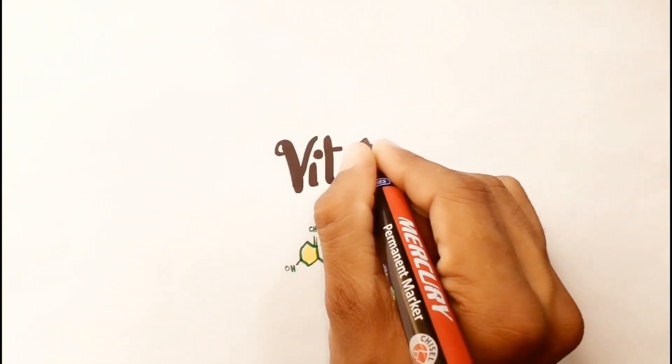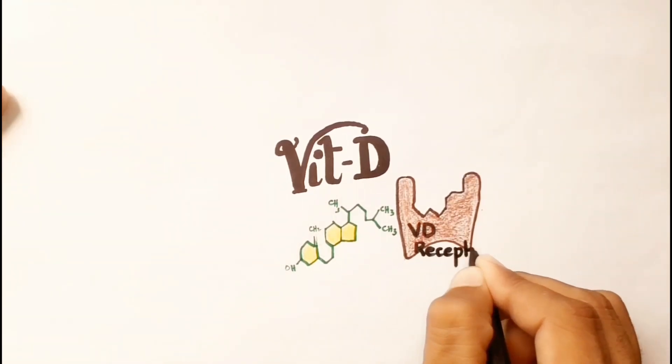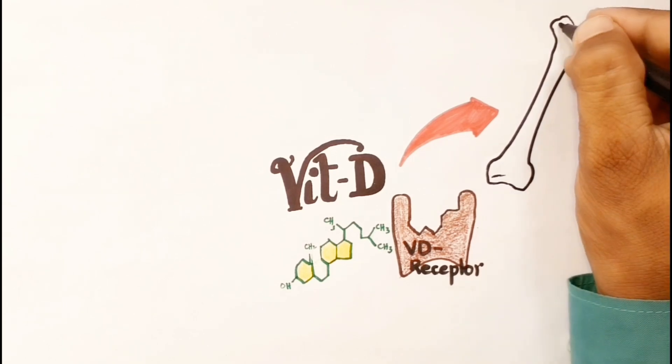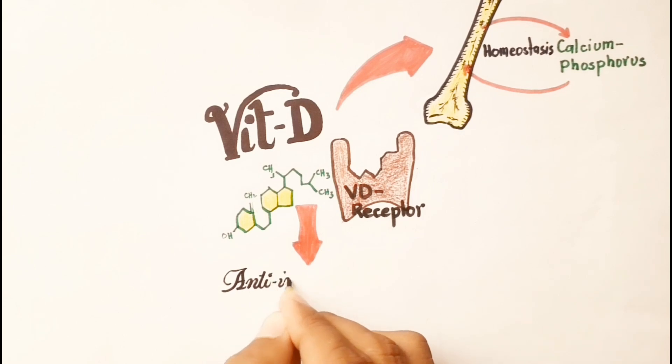Vitamin D, together with vitamin D receptor, has functions such as bone and calcium-phosphorus homeostasis, but also has anti-inflammatory and immune regulatory functions.